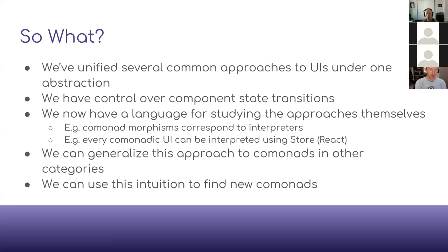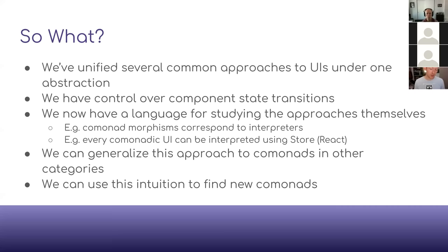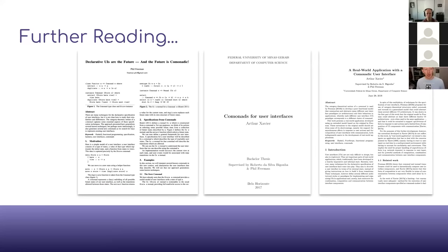Also, there's very little assumed about the category in which I'm working — I can generalize this to lots of different categories. For example, the incremental category, which is what I use for the Purview library using incremental lambda calculus. That tells me I have a whole category full of incremental UIs because I can take any comonad in the incremental category and use it to build a UI too. We can also use this intuition to pull back knowledge from UIs to learn about comonads — we can say 'I have this idea from UI design, what comonad represents it?'